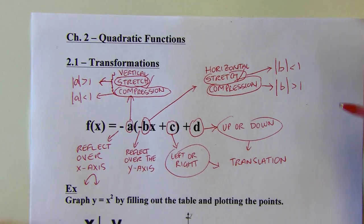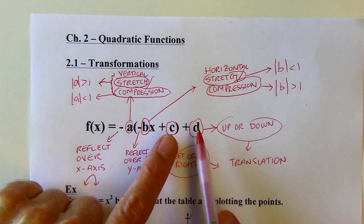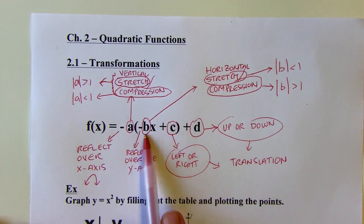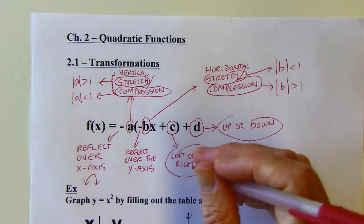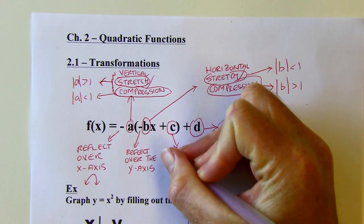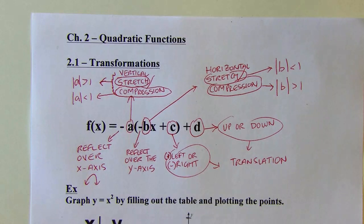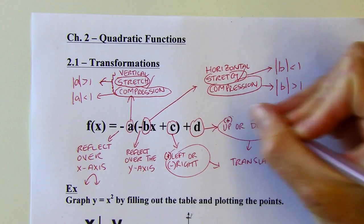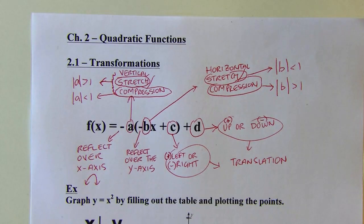For this particular form, the vertex of the parabola would be at the point negative c, d — though that depends on whether there's a b value in there. When you're adding something inside the parentheses, that's going to move things left; subtracting moves things to the right, which is a bit counterintuitive. Up or down works as you'd expect: adding on the outside moves things up, and subtracting moves things down.